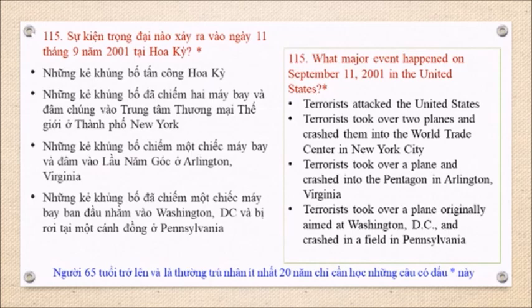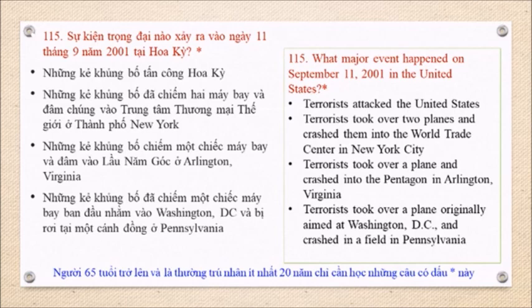Question 115: What major event happened on September 11, 2001 in the United States? Terrorists attacked the United States. Terrorists took over two planes and crashed them into the World Trade Center in New York City. Terrorists took over a plane and crashed it into the Pentagon in Arlington, Virginia. Terrorists took over a plane originally aimed at Washington, D.C., and crashed it in a field in Pennsylvania.